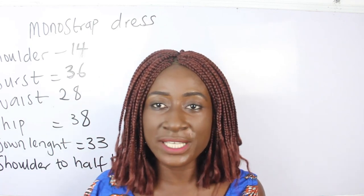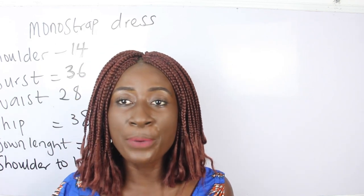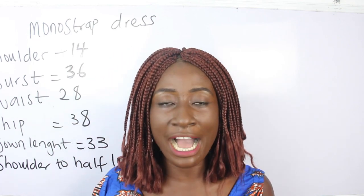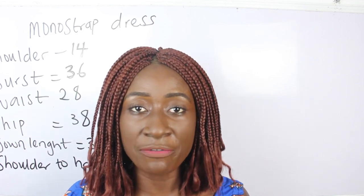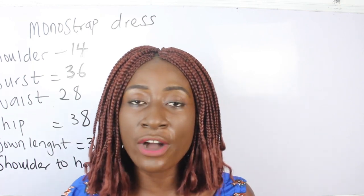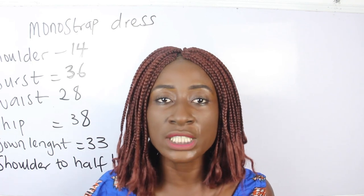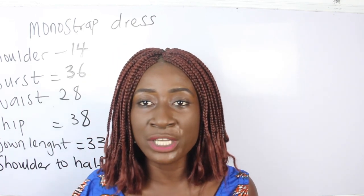The basic measurements required are: shoulder, bust, waist, hip, gown length, and half length. To know your half length, it simply means from your shoulder to one inch above your navel. Go ahead and measure that in order to know your half length.